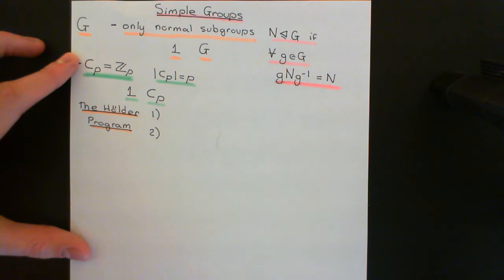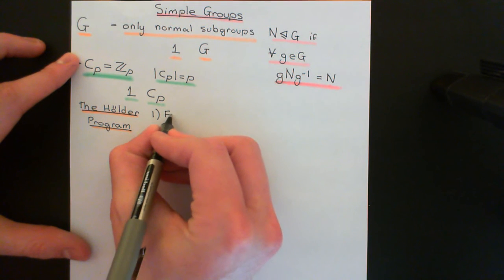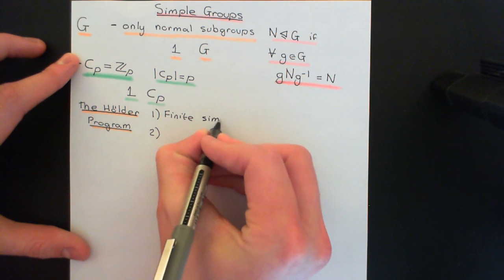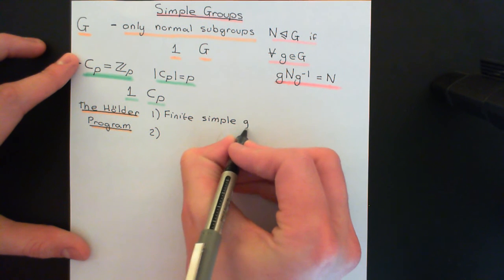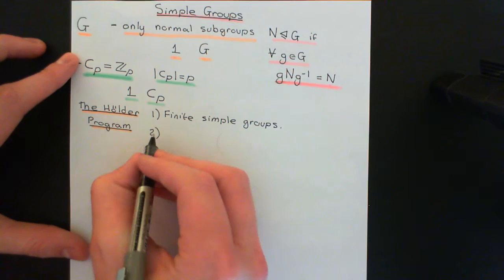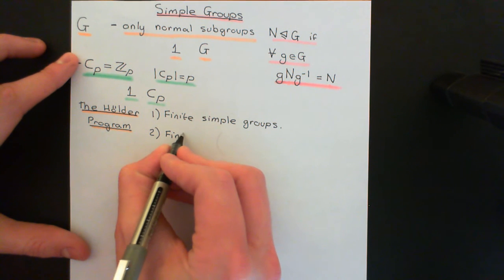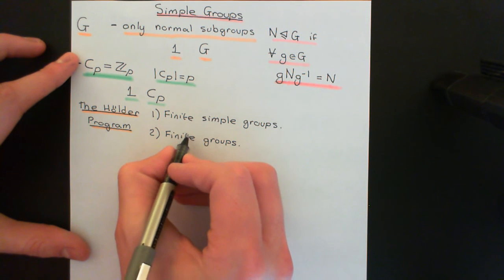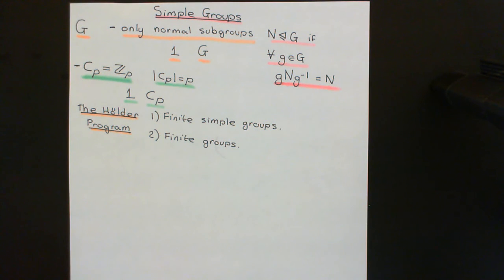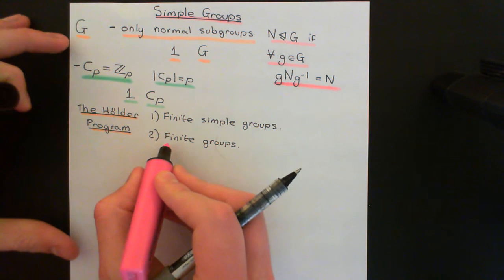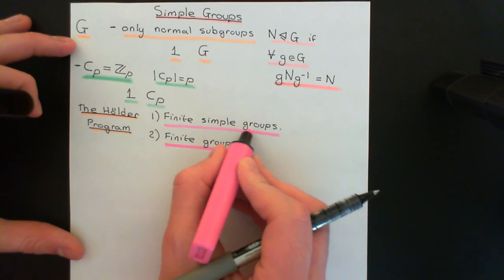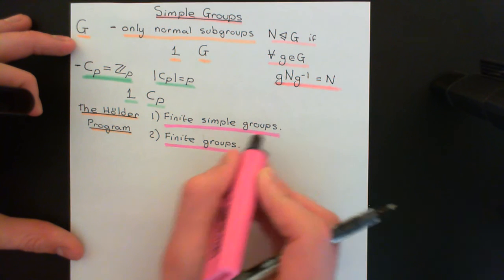Objective number one was to classify all finite simple groups — to get a complete list of all of the families of finite simple groups. Part two of the Hölder Program was then to classify all finite groups. In a future video on composition series, I will explain that all finite groups can be thought of as being made up by finite simple groups. Finite simple groups, if you like, are the building blocks for finite groups.